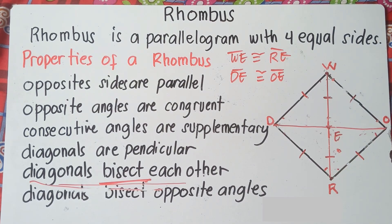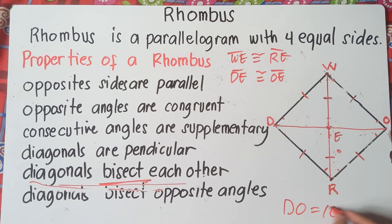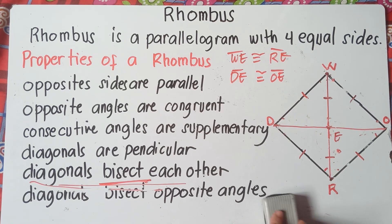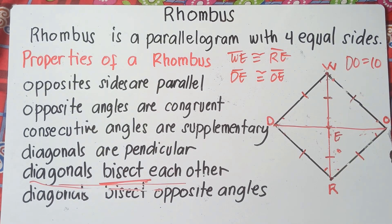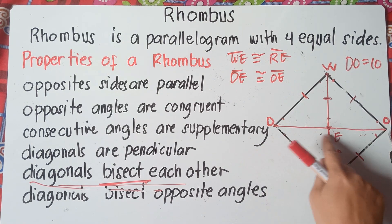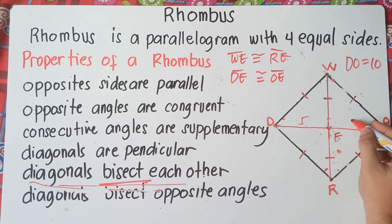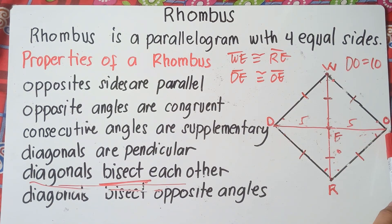For example, if DO equals 10, then DE must be 5 and OE must be 5, because the diagonals bisect each other and cut the line into two equal parts. Similarly, if WR is 8, then WE is 4 and RE is 4, because 8 divided by 2 equals 4.